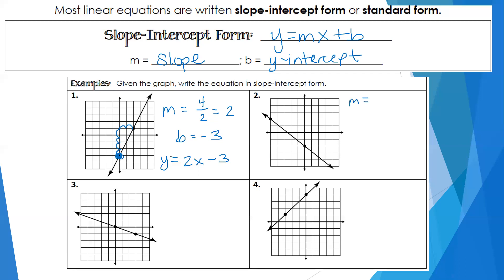In number two, I rise four and run five — but this time I went left, so that's a negative five. The slope is negative four-fifths, which doesn't reduce. The y-intercept is at negative two, so the equation is y equals negative four-fifths x minus two. Remember, a negative four over five, or four over negative five, or negative four over five — those are all the same number, so as long as you have one negative sign, that's fine.